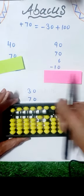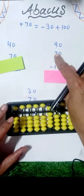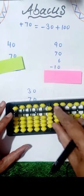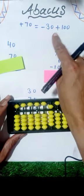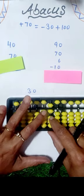Next question: 90 plus 70. Again we have no bead for 70. That is why we will apply the formula minus 30 plus 100.